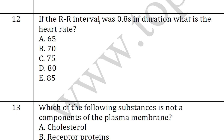The twelfth question: if the R-R interval was 0.8 seconds in duration, what is the heart rate? The answer is C, 75 beats per minute.